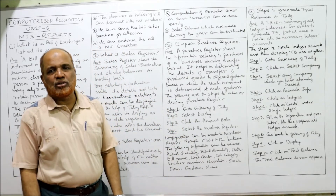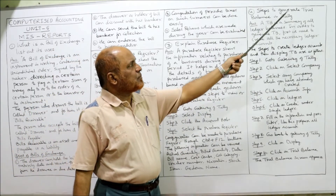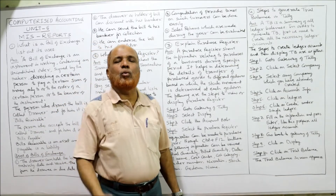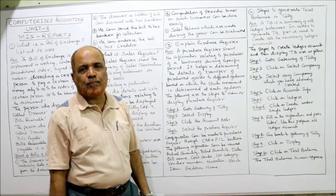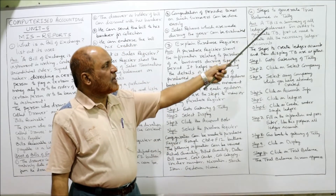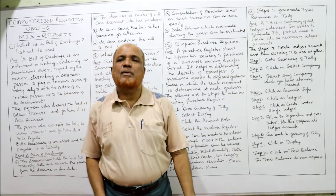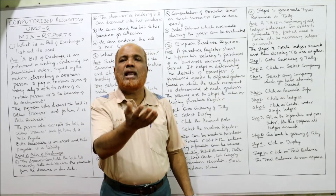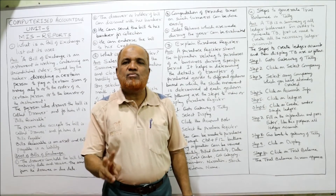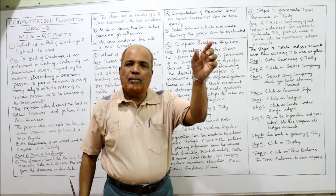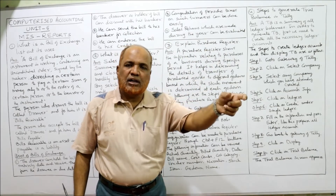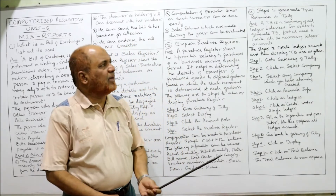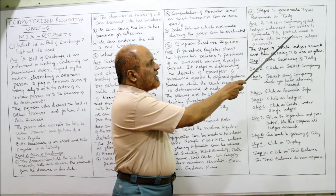The last question: what are the steps to generate trial balance in Tally ERP 9? A trial balance is a summary of all ledger balances. It is a statement listing all ledger balances with two columns — debit and credit. All debit balances go in the debit column, all credit balances in the credit column. If there are no errors, the totals of both columns will be equal.